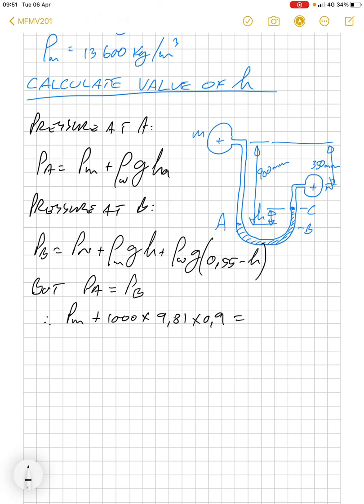P_N plus 13,600 times 9.81 H plus 1000 times 9.81 times (0.055 minus H).